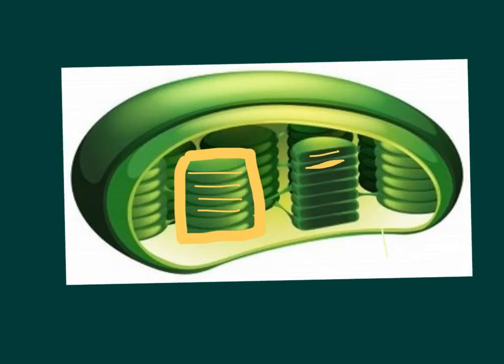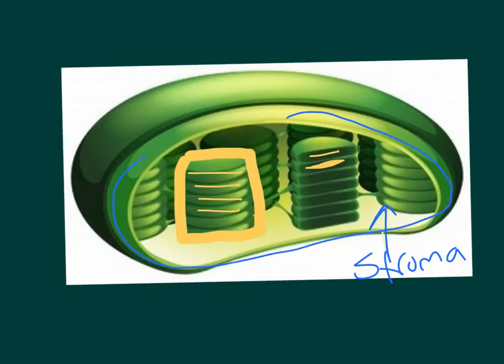And then outside here is called the stroma. So the stroma is outside of the thylakoid, but still inside of the chloroplast. And so you have to keep that in mind.